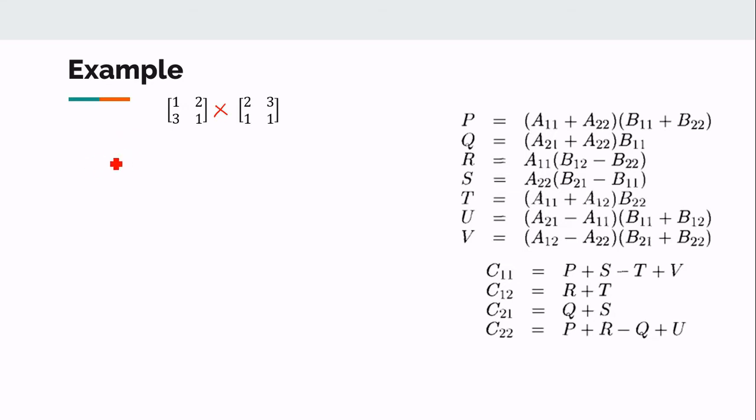Here let us compute P. P will be A11 plus A22. A11 this is matrix A and this one is matrix B. So A11 is 1 and A22 is 1. So 2 into B11, what is B11? B11 is 2 and B22 is 1. So 2 plus 1 is 3. So P will be 6.